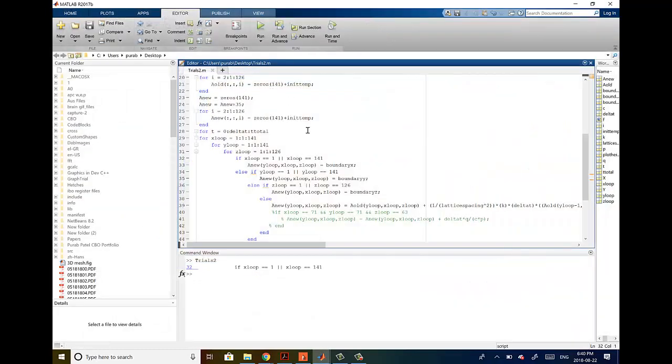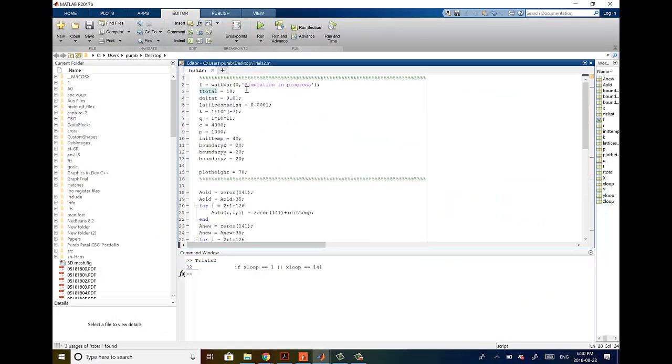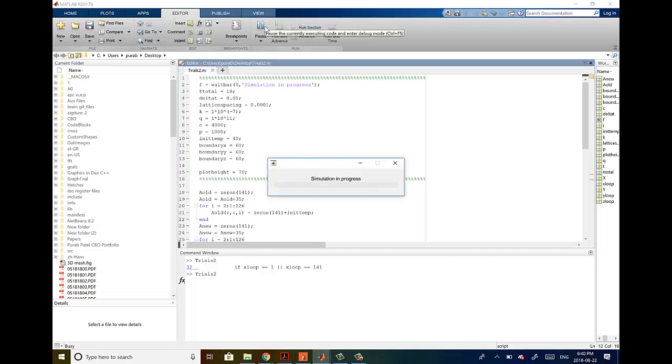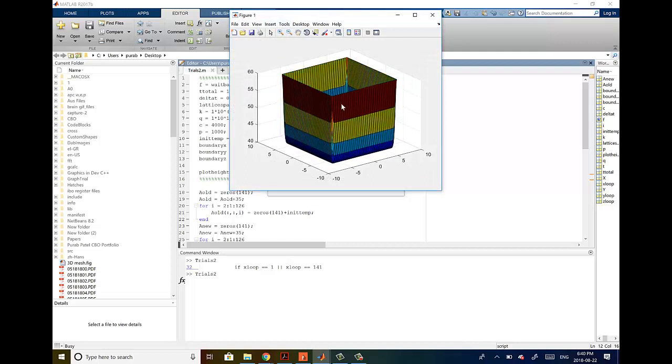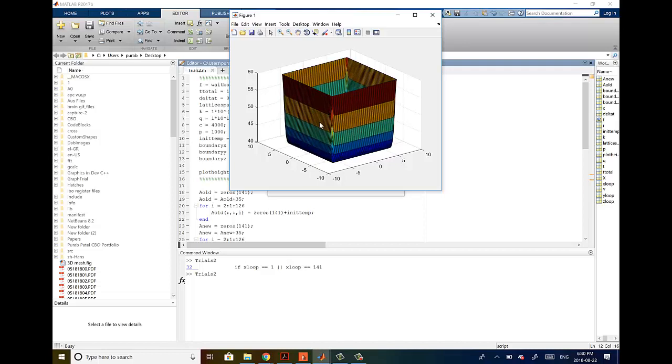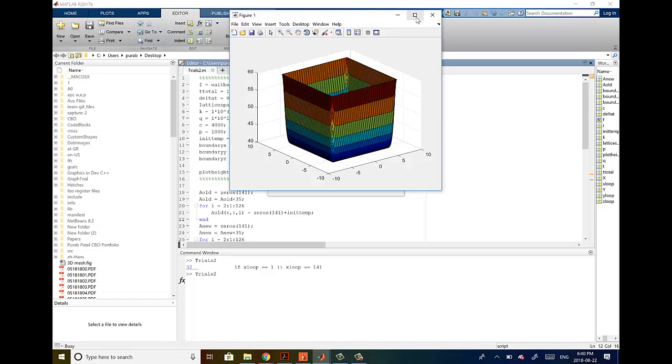I'll quit that simulation. You can also change these parameters around. For example, if I were to set these to something higher than 40, if I set this to, for example, 60, and if I run the program, you can see that now the temperature is rising. The edges are the warmest and the center is slowly heating up and coming towards 60 Celsius. It's basically just an inverted plot of the previous simulation that I just ran.